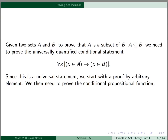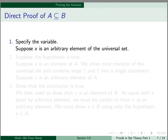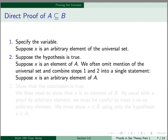Given two sets A and B, to prove that A is a subset of B, we need to prove the universally quantified conditional statement: for all x, x is an element of A implies x is an element of B. Since this is a universal statement, we start with the proof by arbitrary element and then need to prove the conditional propositional function. The template for a direct proof of A⊆B: first, we suppose x is an arbitrary element of the universal set. Next, we suppose the hypothesis is true, so we suppose x is an element of A. We can often omit mention of the universal set and combine steps 1 and 2 into a single statement: suppose x is an arbitrary element of A.